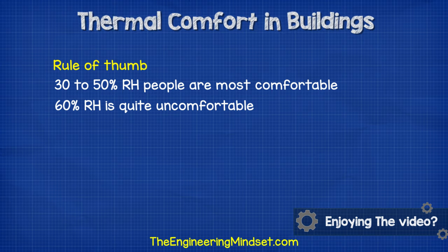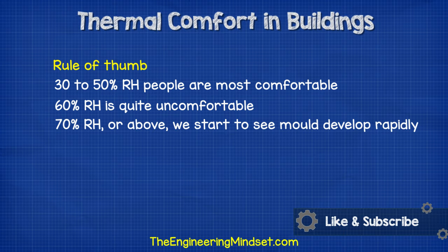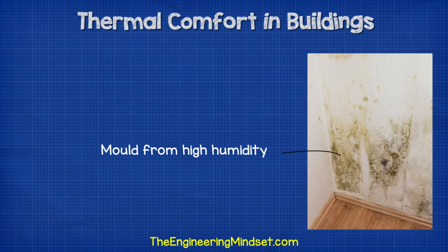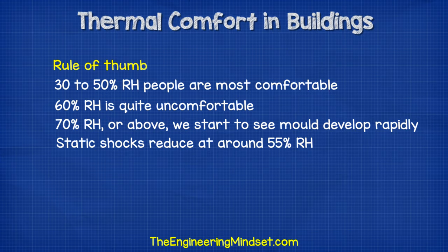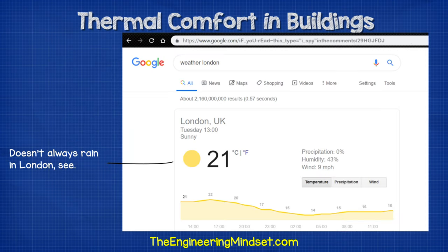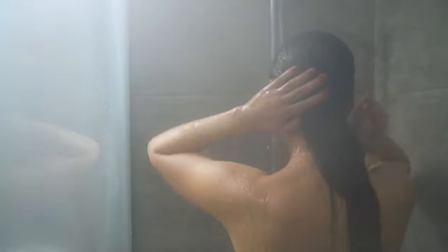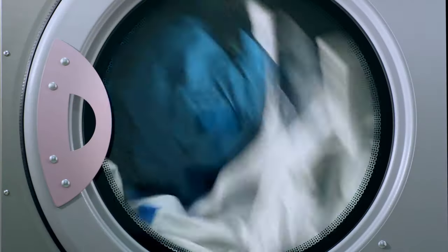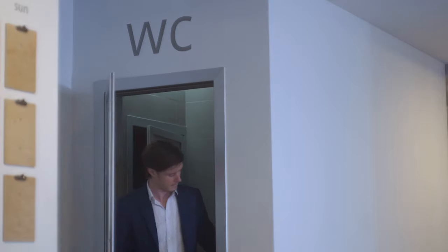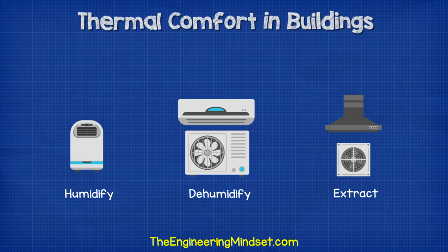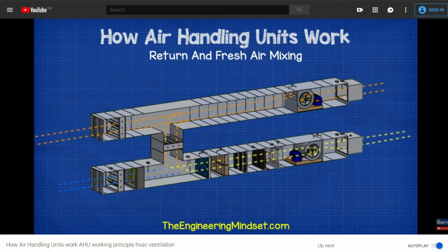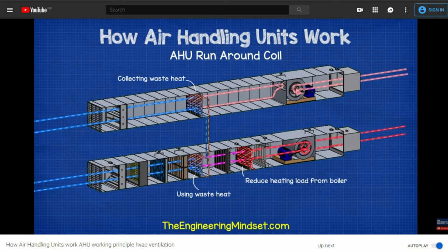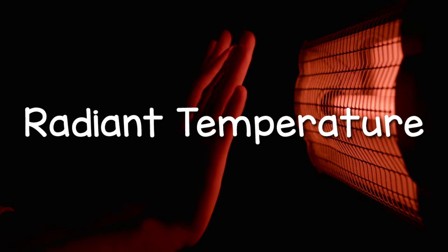As a rule of thumb, people are comfortable in 30 to 50% relative humidity. At 60% it's quite uncomfortable, and as we reach 70% relative humidity or above, that's when we start to see mold developing rapidly — you'll probably notice this in bathrooms with high moisture levels and very low ventilation. We can also reduce static shock by keeping our environment at around 55%. Things like kettles, boiling water, showers, or even drying clothes will all add moisture to our environment, so we want to try to isolate these and keep them separated and well ventilated.